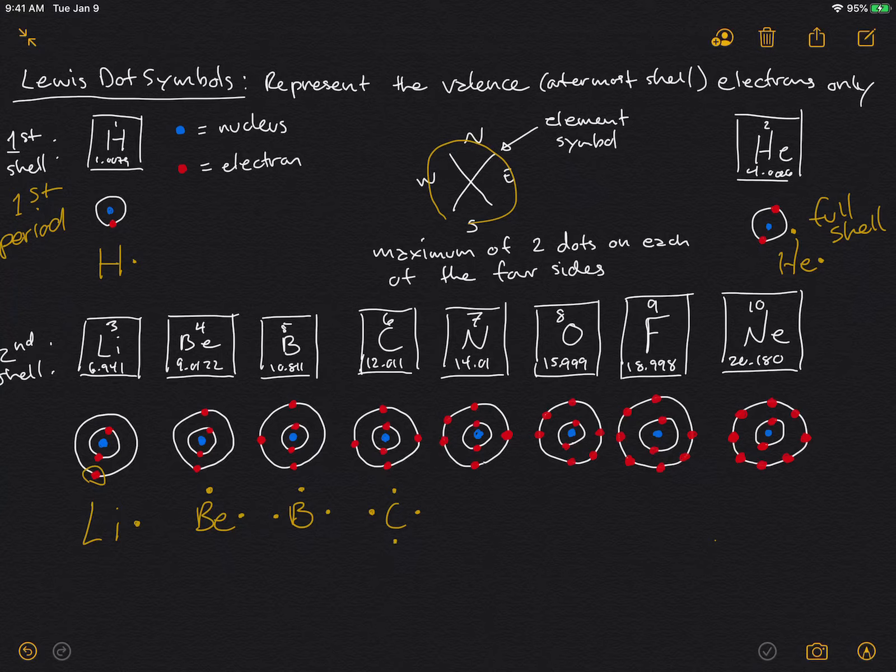When we get to nitrogen we have something a little different. We've got five valence electrons in the second shell, and so now we have to start pairing electrons. So now we have two electrons on one side.